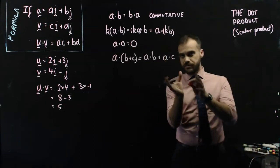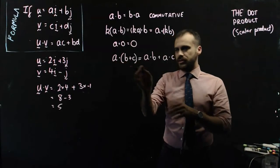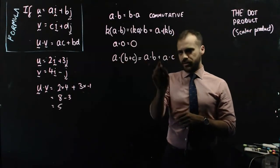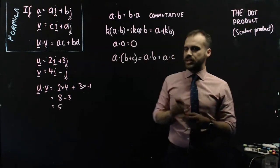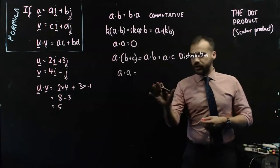We can say it's distributive, and that means that a dot b plus c is equal to a dot b plus a dot c, the distributive law, so you can see that that's distributive.